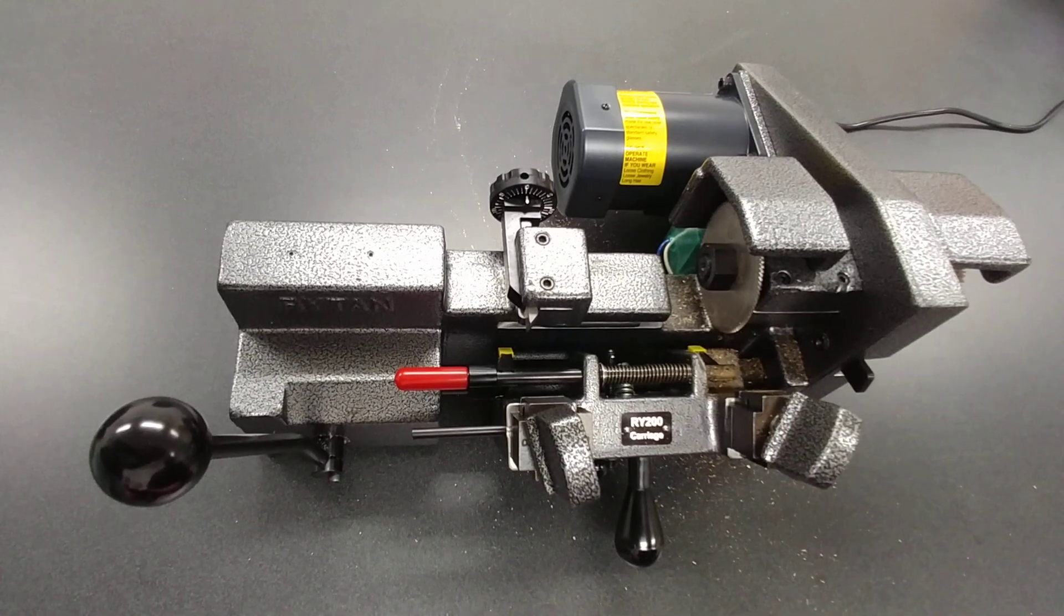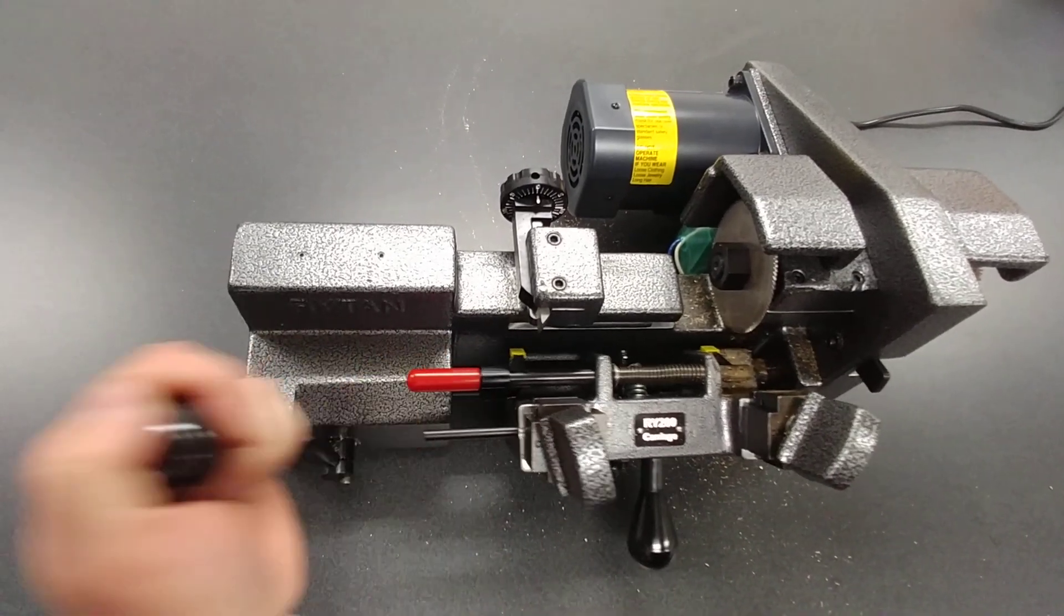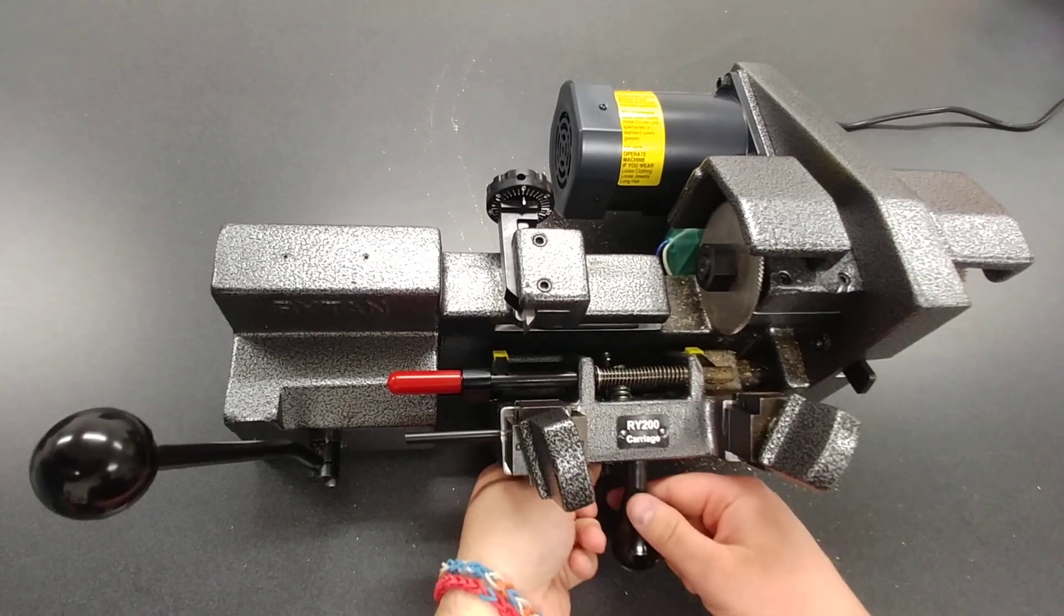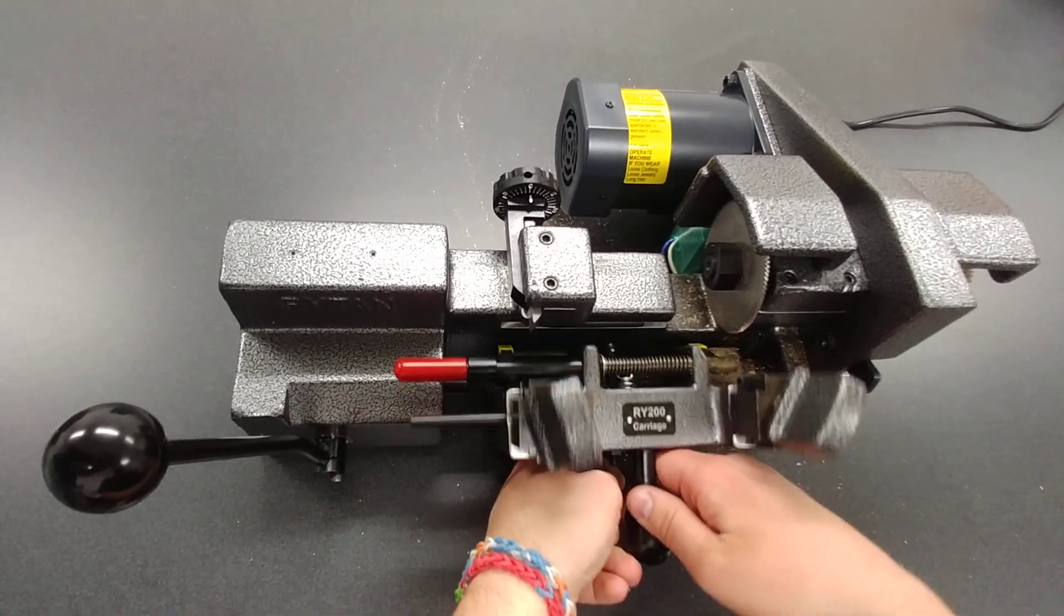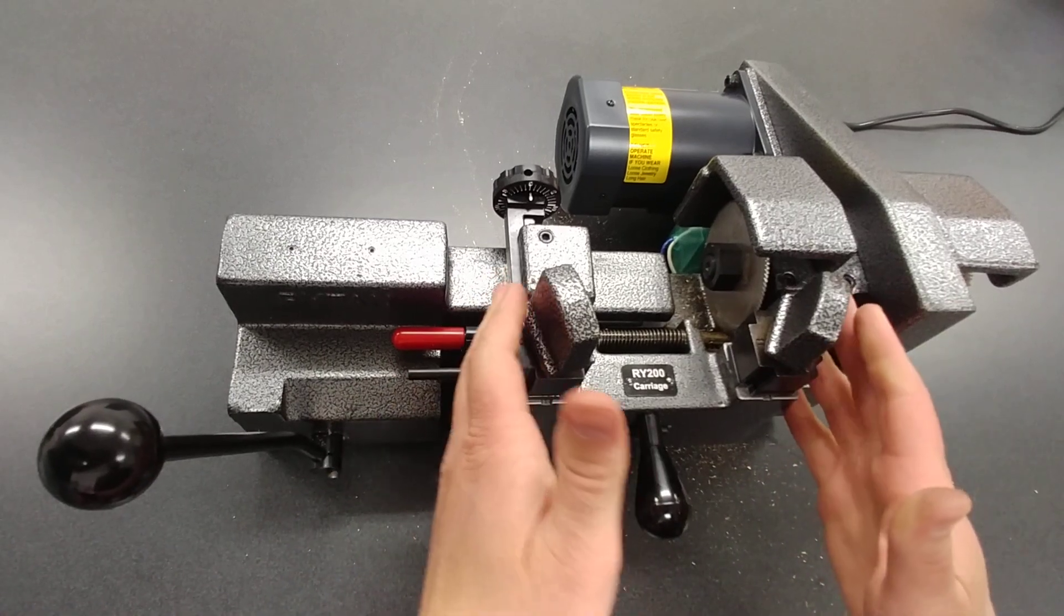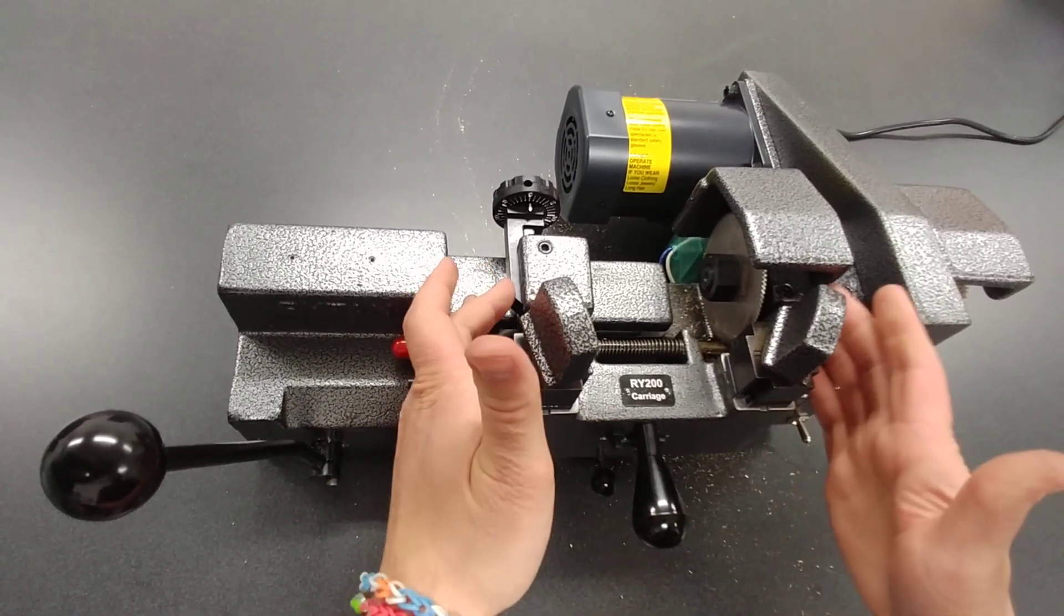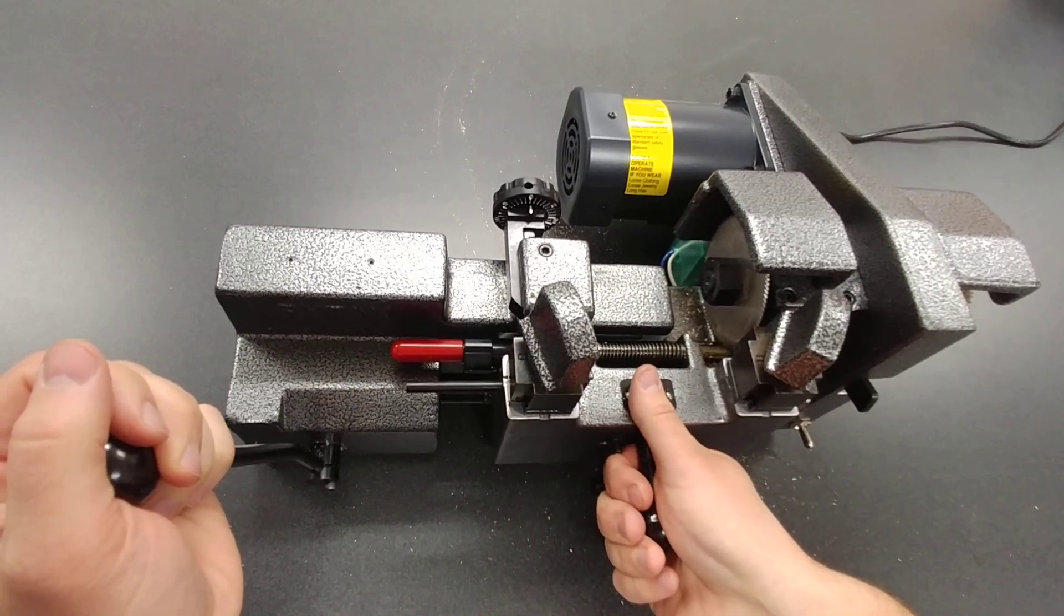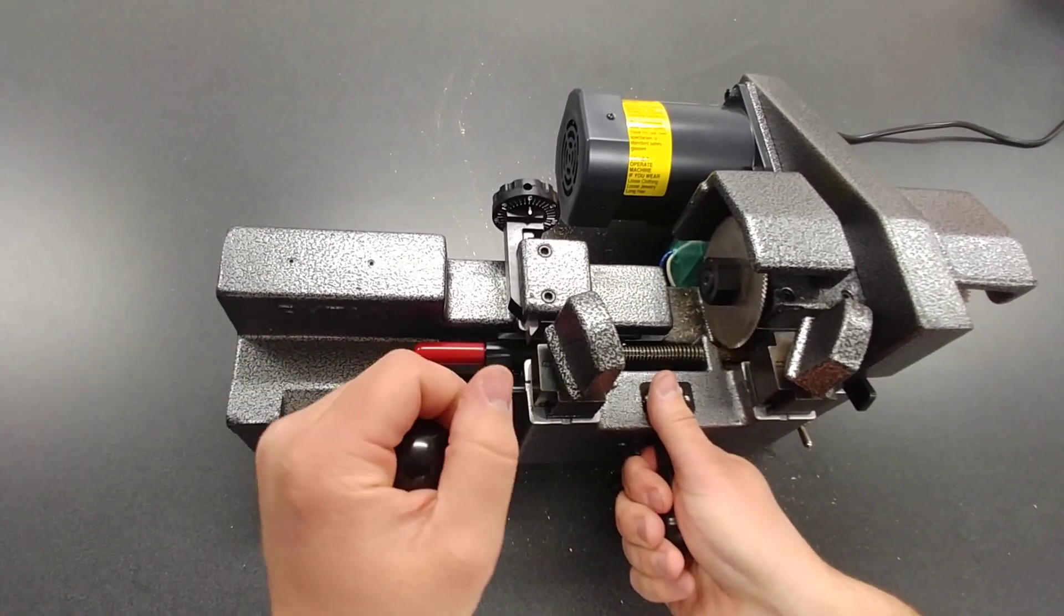What I mean by semi-automatic is you'll see this lever right here when I move it back and forth, moves this whole carriage back and forth. When you release this little pin here at the bottom, there's spring tension that holds the carriage when you put the key in it against the tracer and the cutter. You're essentially just kind of holding on to the carriage and you're just guiding it back and forth with this lever here.